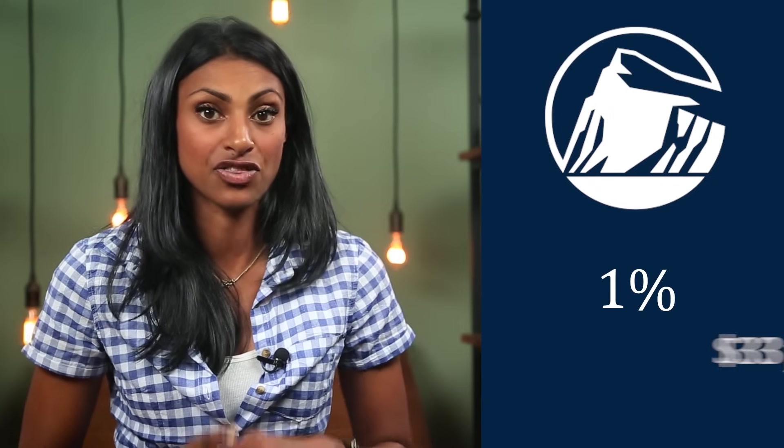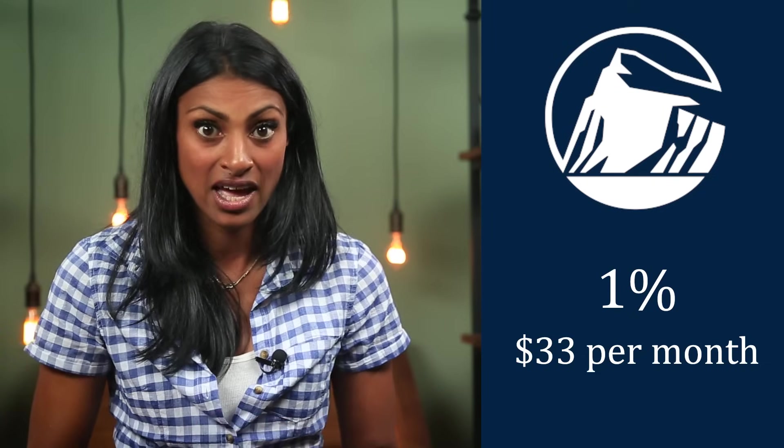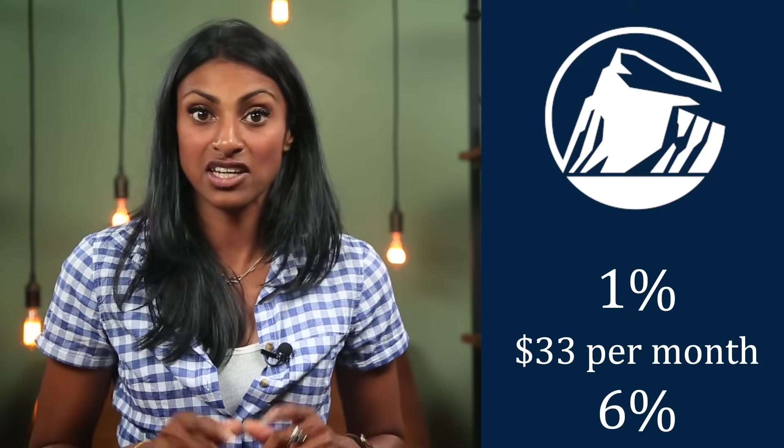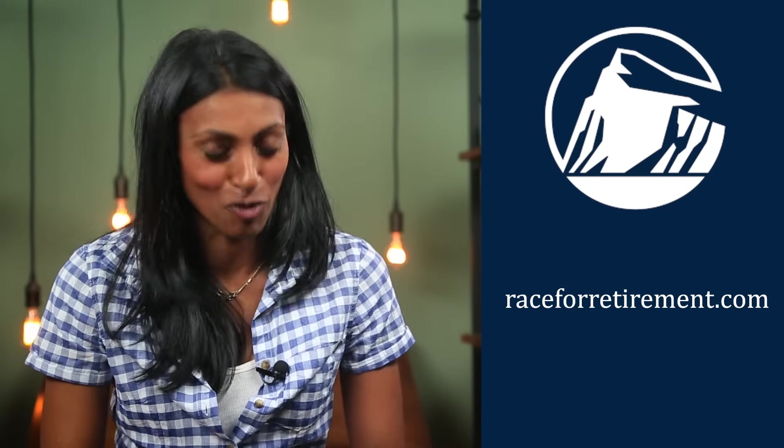Thanks to Prudential for sponsoring this episode. Saving a little more today – even just 1% more of your annual income – can go a long way toward building a better retirement tomorrow. For example, a 25-year-old earning $40,000 a year planning to retire at 70, who saves an additional 1% of their salary by deducting $33 a month from their paycheck and earns 6% compounding interest, could increase their retirement savings by about $97,943.73. Go to ratesforretirement.com for more information.